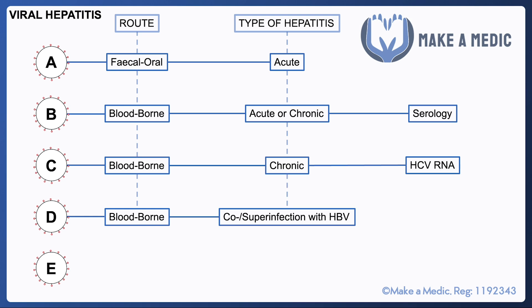Hepatitis D is again bloodborne and the interesting thing about hepatitis D is that it can only infect humans in the presence of hepatitis B. This could be a co-infection — for example, an IV drug user using a needle contaminated with both hepatitis B and D — or it could be a super-infection, in which a patient who already has hepatitis B somehow gets exposed to hepatitis D, which is then able to cause an infection.